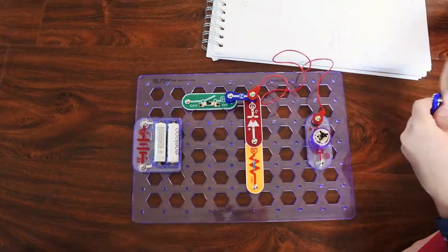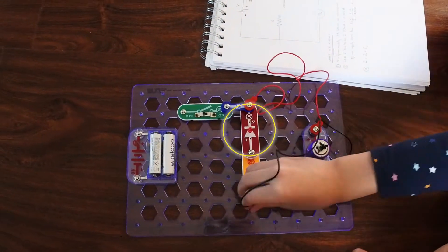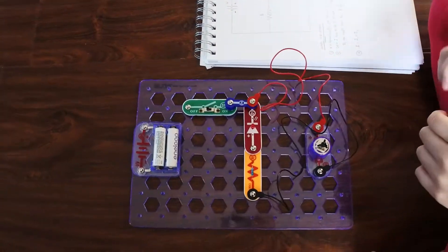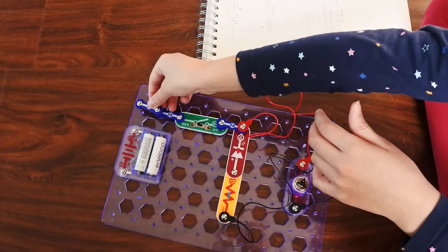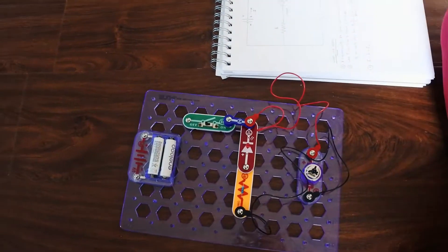For example, she places the LED in the wrong direction. The LED will not light up, which she realizes when she tests the circuit and corrects it on her own.